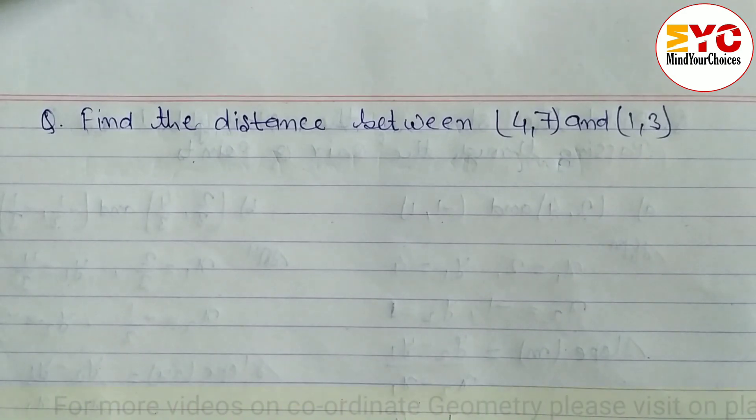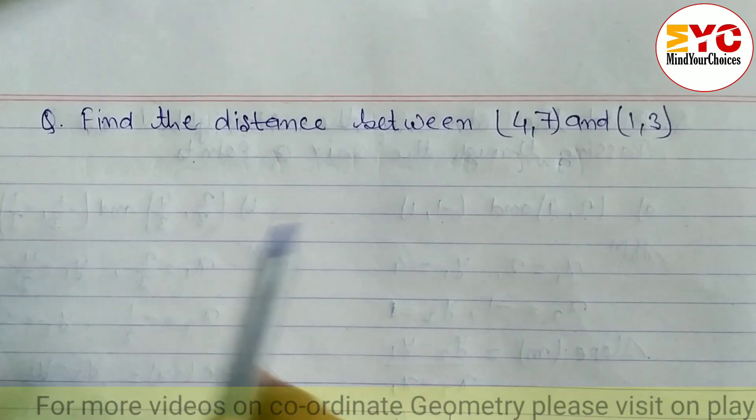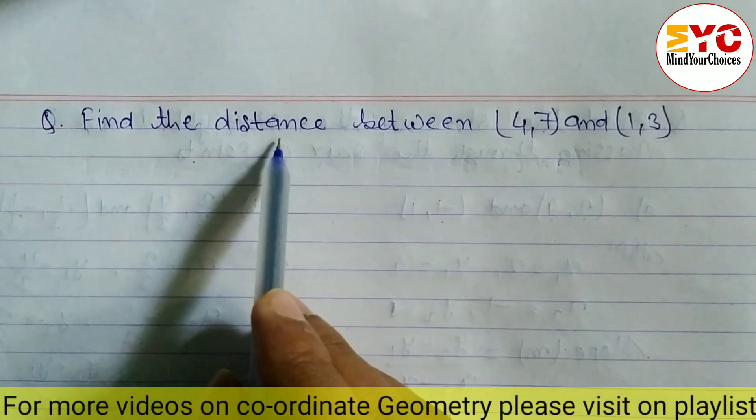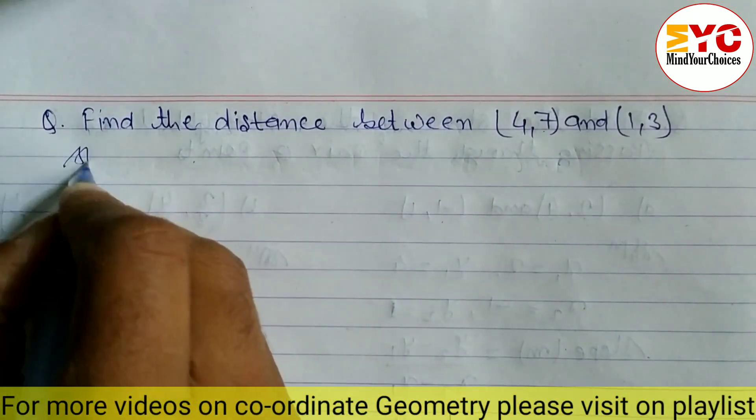In this video, we will learn how to find the distance between two points. Here, two points are given: (4,7) and (1,3). We have to find the distance between these two points. Let's start.